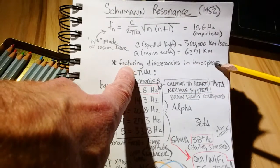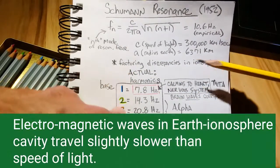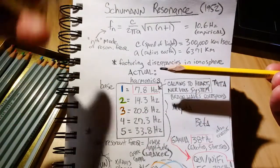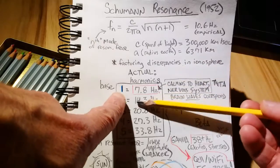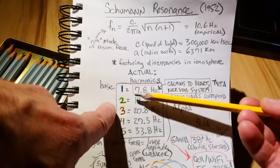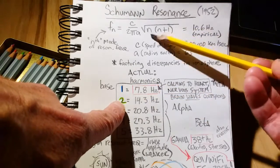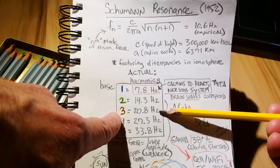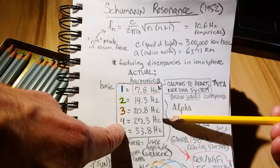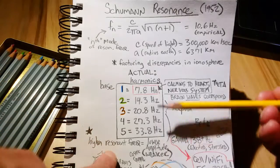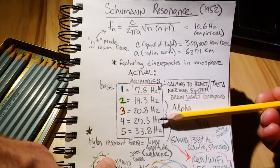Well, factoring in the discrepancies for the ionosphere, the actual harmonics for Earth's natural resonance turns out to be base 1 is 7.8 hertz, and base 2, if we plug that in for n, is 14.3 hertz, 20.8 hertz, 27.3 hertz, and 33.8 hertz, etc. down the line.